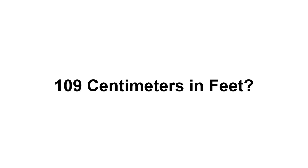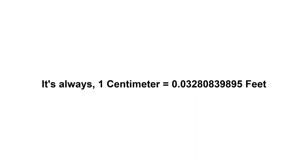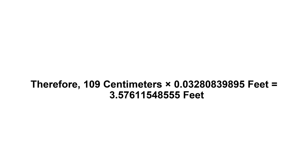109 centimeters in feet. First of all, we need to know the value of one centimeter in feet. One centimeter equals 0.03280839895 feet. Now we have to multiply 0.03280839895 by 109. Therefore, 109 centimeters times 0.03280839895 feet equals...